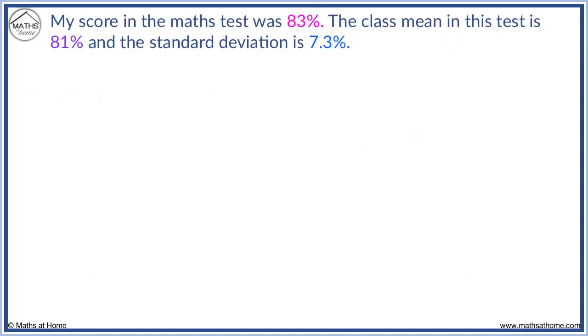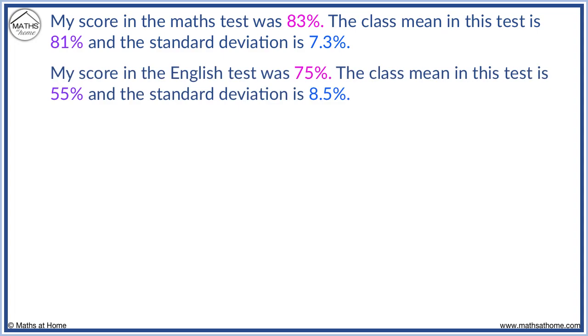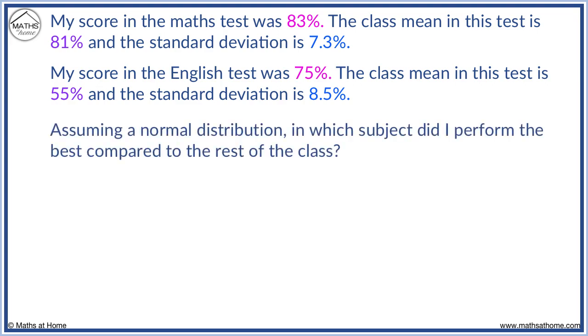For example, my score in the maths test was 83%, the class mean is 81% and the standard deviation is 7.3%. My English score was 75%, the mean was 55% and the standard deviation was 8.5%. Assuming a normal distribution, in which subject did I perform the best compared to the rest of the class?